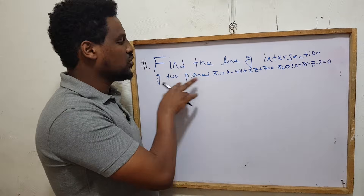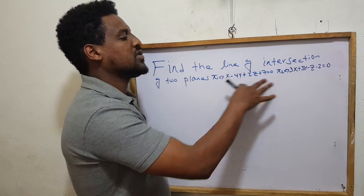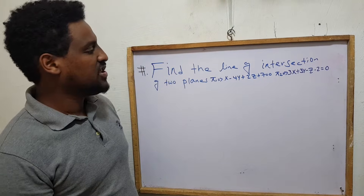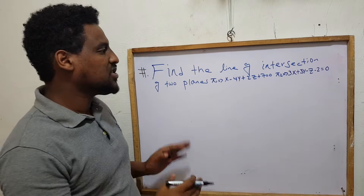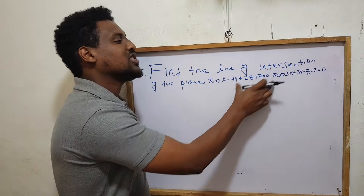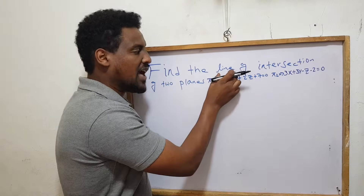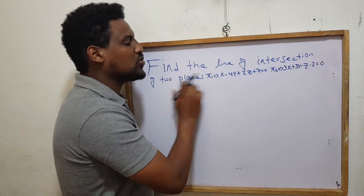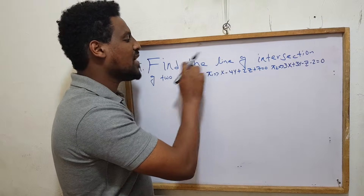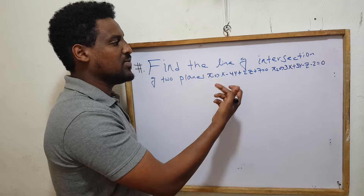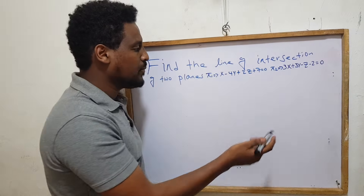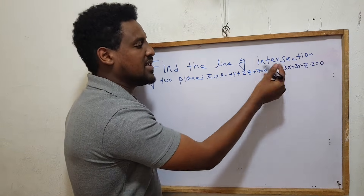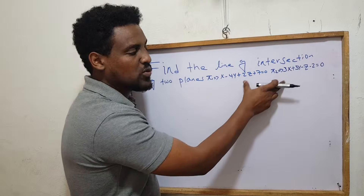Find the line of intersection of two planes pi 1 and pi 2. We can see the plane of intersection line and intersection point. Since the source variables are x, y, z, we can find the line of intersection.